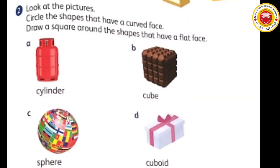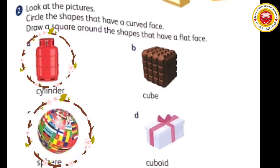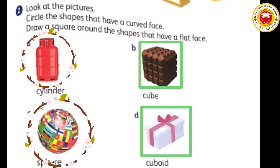Now number two. Look at the pictures. Circle the shapes that have a curved face. Draw a square around the shapes that have a flat face. Artinya, kalian lingkari bentuk yang mempunyai sisi lengkung, dan gambarlah sebuah persegi pada bentuk yang mempunyai sisi datar. Di sana ada gambar sebuah tabung gas, yang B itu gambar kubus, yang C bola dunia, dan D ada sebuah kardus. Tabung gas dan bola dunia mempunyai sisi lengkung, sedangkan kubus dan kotak kardus mempunyai sisi datar.